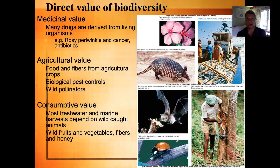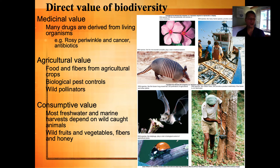There is also agricultural value to biodiversity. We can create food and fibers — cotton fibers from agricultural crops. There are biological pest controls; for example, ladybugs eat aphids. If you have aphids in your flower garden, you want ladybugs to come eat them rather than having to spray with pesticides. Pollination by bees, bats, and other organisms is also quite helpful, especially for farmers like apple orchard owners who need bees to pollinate their trees in order to get fruit in the fall.